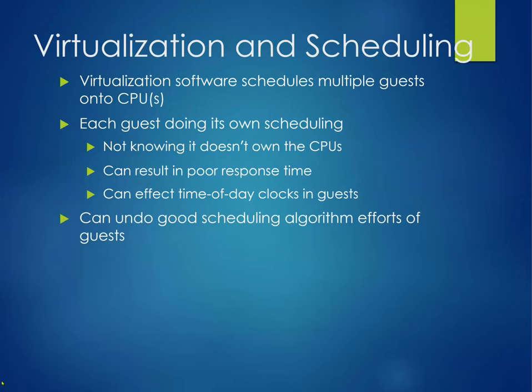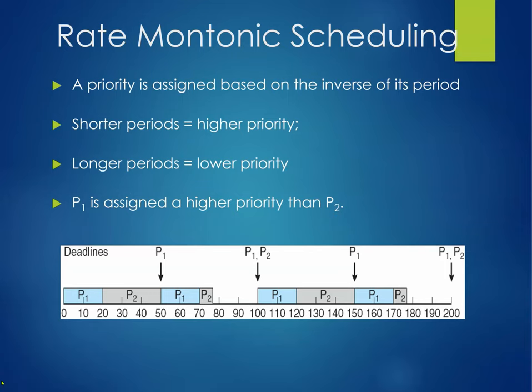Now there's the concept of virtualization. Virtualization software schedules multiple guests onto the CPU, and each guest does its own scheduling. A virtual machine has its own scheduler for its operating system, and the set of virtual machines as a whole has its own scheduler. The VM doesn't know it doesn't own the CPU, so you can get poor response time, and it can mess up time-of-day clocks in the guests and disrupt a good scheduling algorithm.